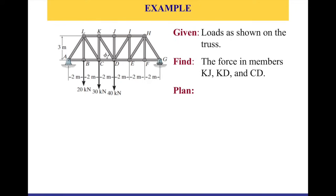In this video, we're going to solve an example together to apply all the steps discussed previously. We are given this truss structure — it's a simple truss but with a lot of components. We have two support reactions at A and G, and three external forces: 20 kN, 30 kN, and 40 kN, all acting downward in the y-axis. We would like to find the forces in members KG, KD, and CD. The method of sections is important when we want to find forces in the middle of a large truss without going joint by joint, which is time-consuming and prone to calculation mistakes.